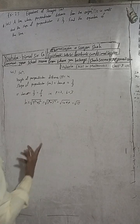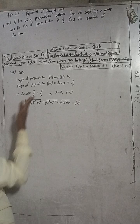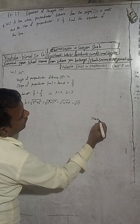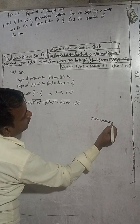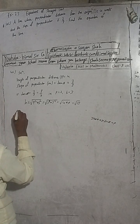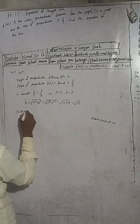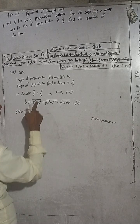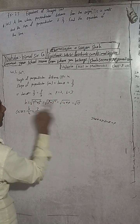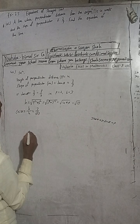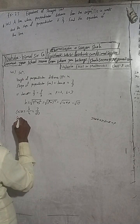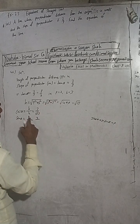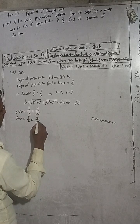We got H equal to root 13. Now we know that the equation of the line in normal form is x cos alpha plus y sin alpha equals P. So find cos alpha: cos alpha equals base by hypotenuse, which is 3 by root 13. In the same way, sin alpha equals perpendicular by hypotenuse, which is 2 by root 13.